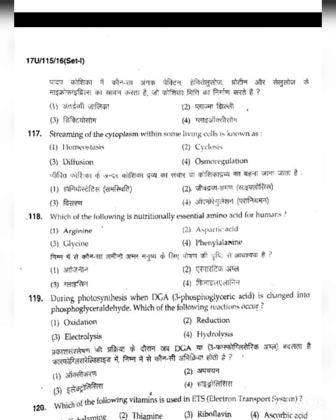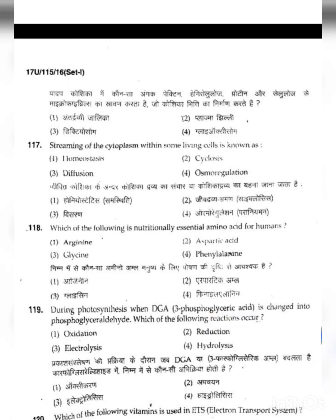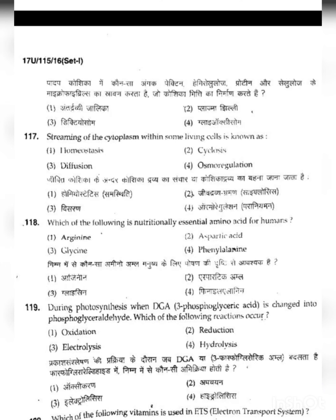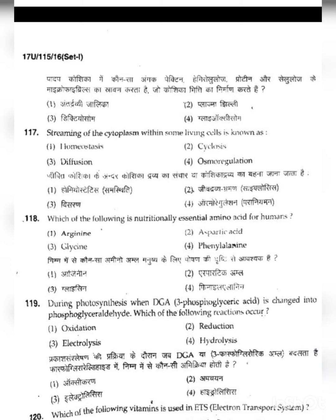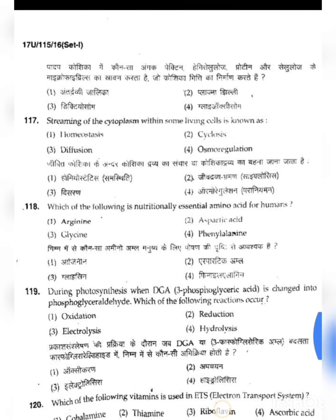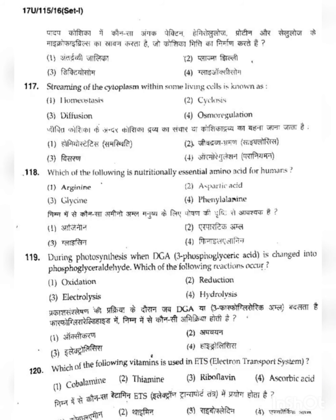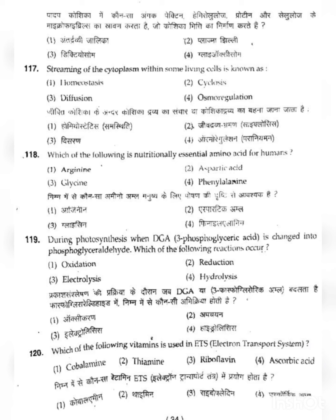Question 117: Streaming of the cytoplasm within some living cells is known as — the answer is cyclosis. Cyclosis means the movement of cytoplasm in various organisms, i.e., the flow of cytoplasm inside the cell. So option 2, cyclosis, is the correct answer for question 117.